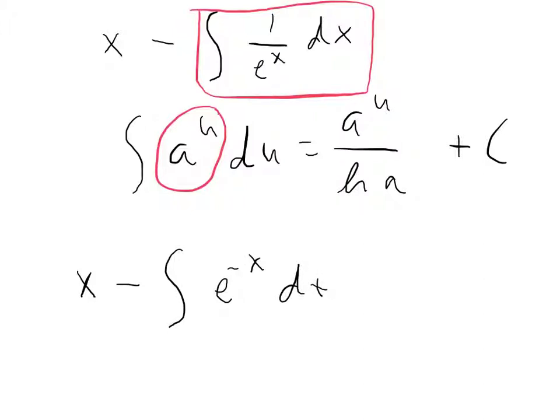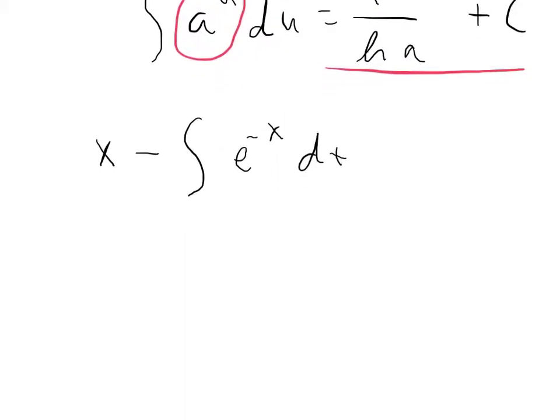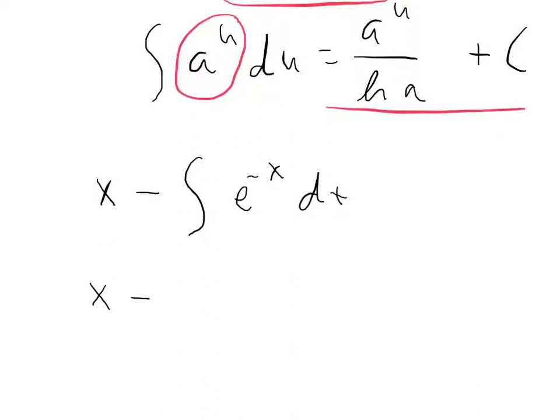And so we're going to go back to this form right here to integrate that second portion. So we're going to slide down here, and we're going to keep the x coming, and we're going to subtract that one too. So it's a to the u, well in this case a is e, and u is negative x, so we're going to call this e to the negative x over ln of a, which is just going to be e. Then of course plus c, never want to forget your constant.